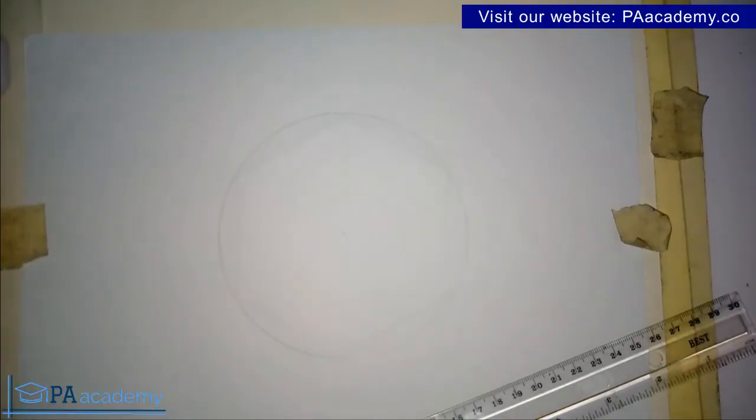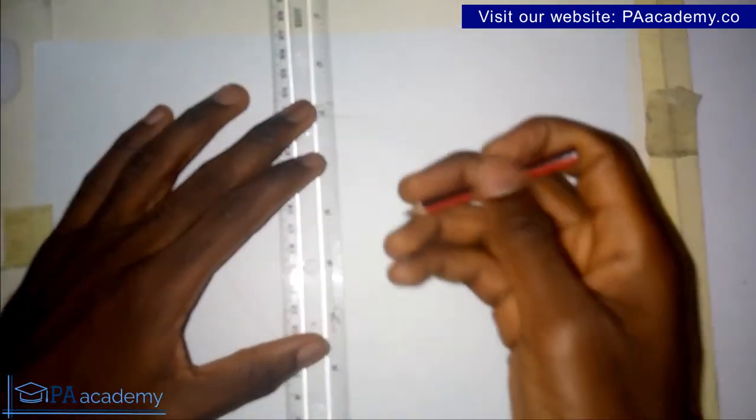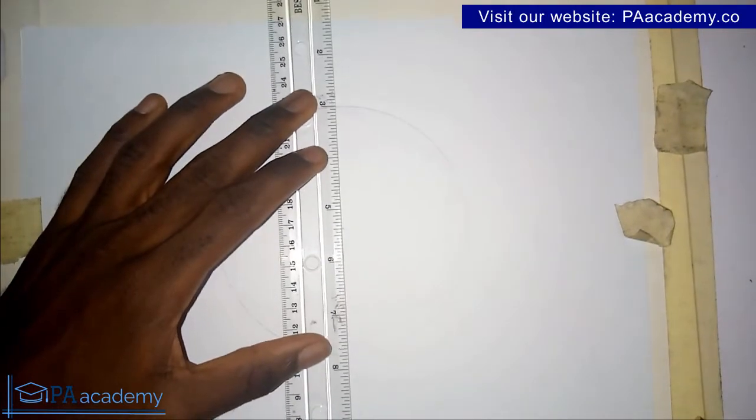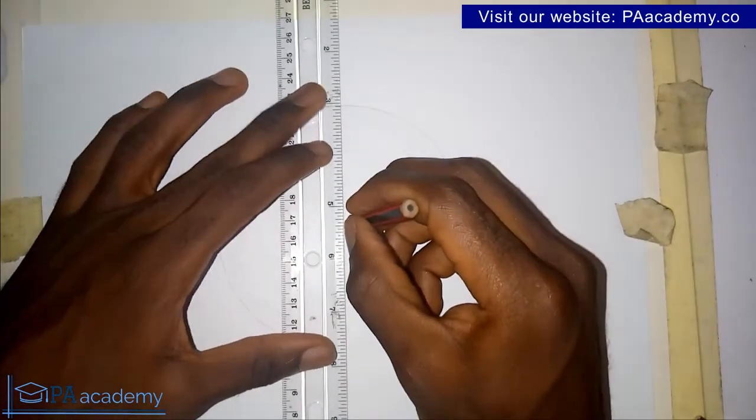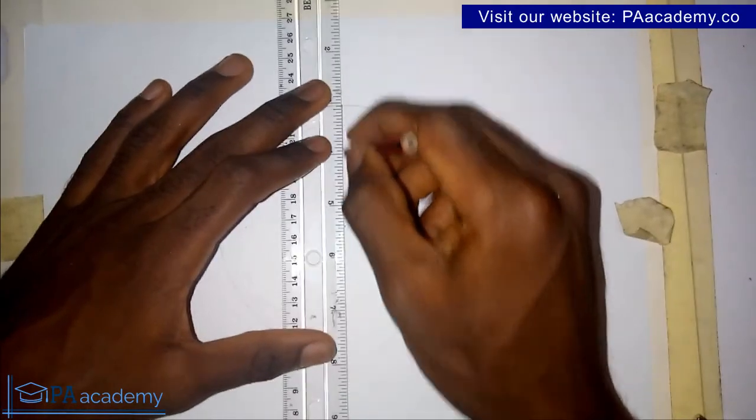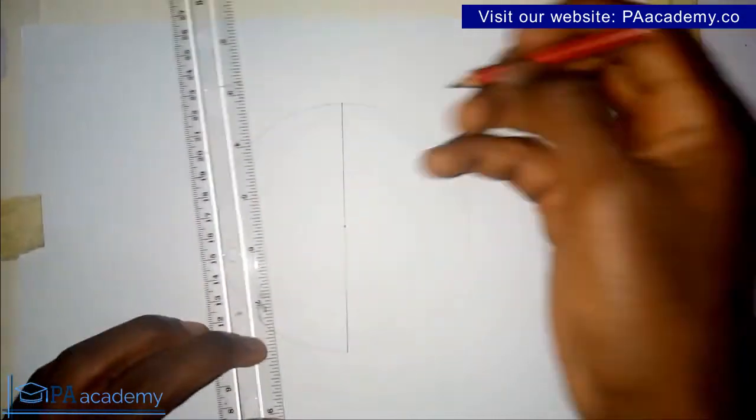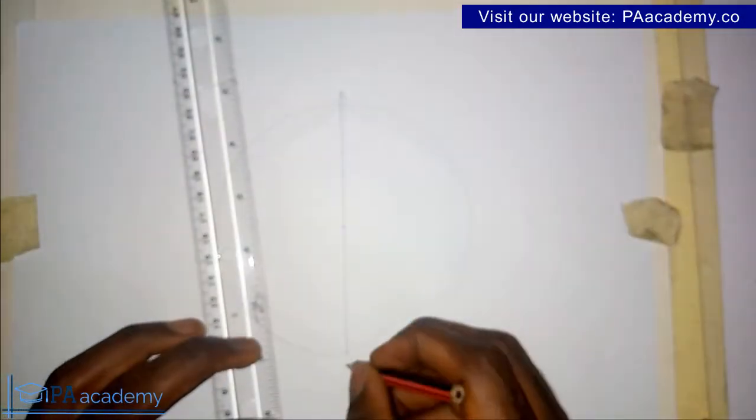So now I'll draw a circle. Right now we already have a circle. The next thing is to draw a line across the center, that is the diameter.